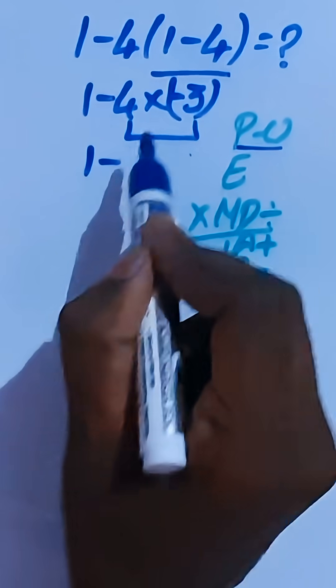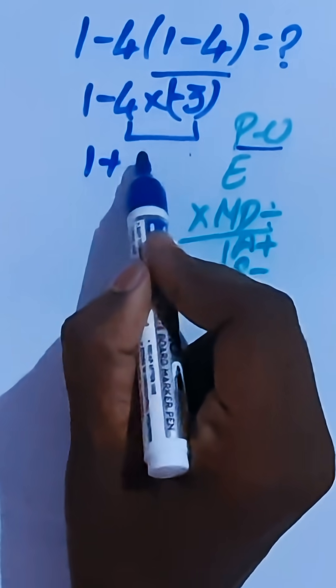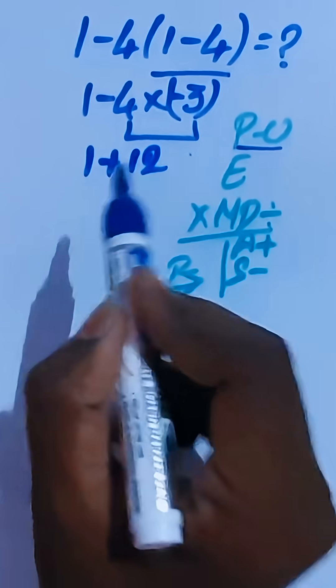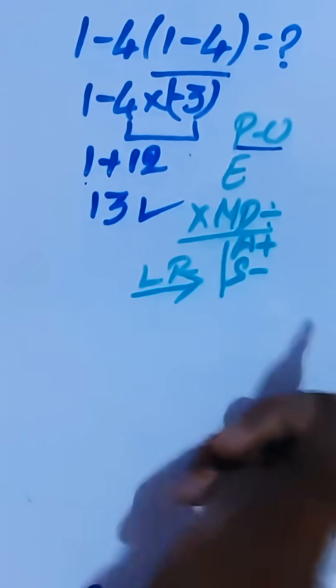So, 1 minus this negative times negative is positive. So here it is 12. 4 times 3 is 12. Here 1 plus 12 is 13, is the correct answer.